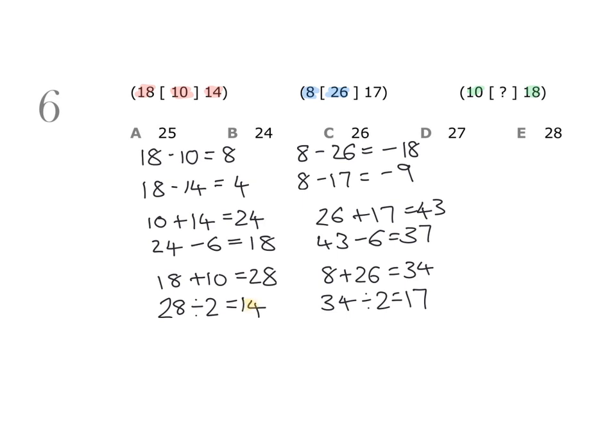In the first and second groups, we ended with the last number, so we're going to start with the last number, which is 18. Then, in the first and second groups, we divided by 2 to get the last number, so because we're going in reverse, we're going to multiply by 2. 18 times 2 is 36.